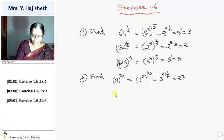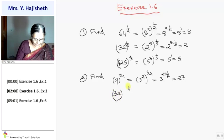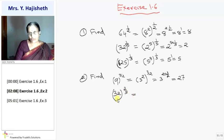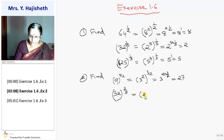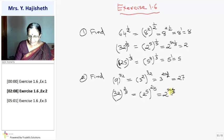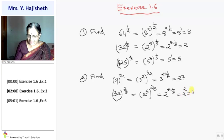Second: 32 raised to 2 by 5, which is the 5th root of 32 squared. I write 32 as 2 raised to 5, so it is 2 raised to 5 into 2 by 5. Using the same law, I get 2 raised to 2, and that is 4.